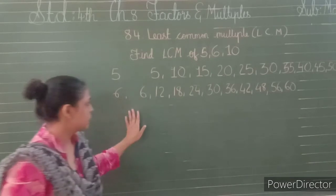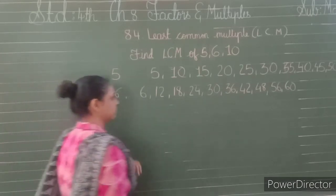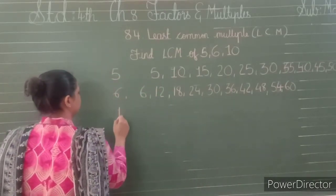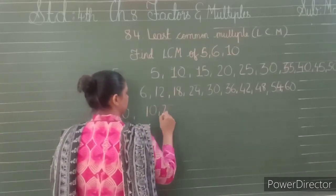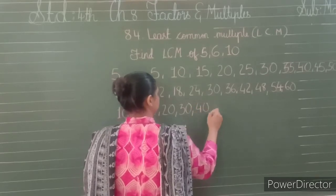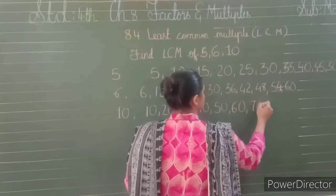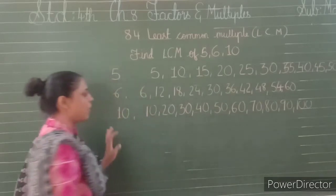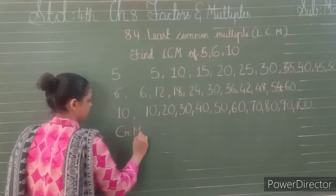Multiples of 6 are: 6, 12, 18, 24, 30, 36, 42, 48, 54, and 60. Now multiples of 10: 10, 20, 30, 40, 50, 60, 70, 80, 90, and 100 and so on.